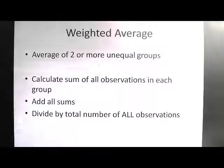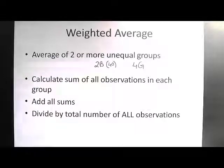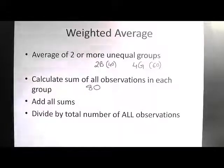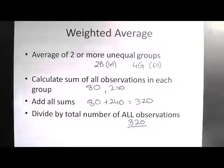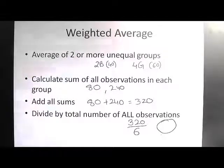Let's say there are two boys and four girls. The average weight for the boys is 40 kg and the average weight for the girls is 60 kg. The total weight of the boys is 2 × 40 = 80, and the total weight of the girls is 4 × 60 = 240. Adding both gives 80 + 240 = 320. We then divide 320 by the total number of people, which is 2 + 4 = 6, to get the weighted average.